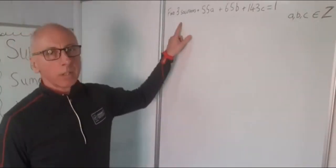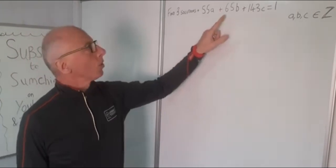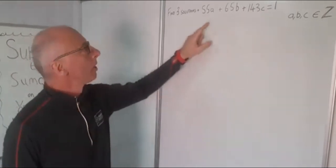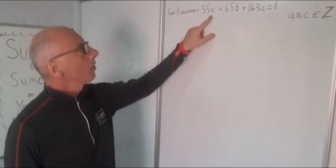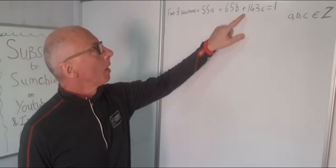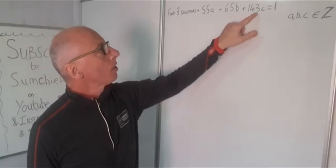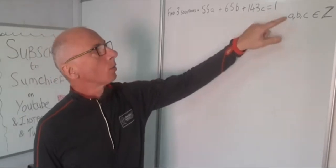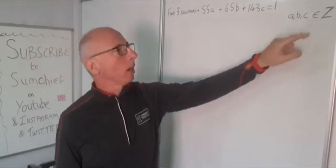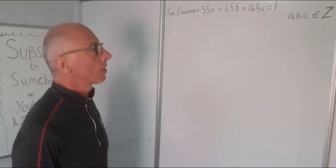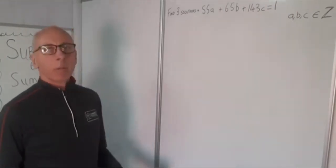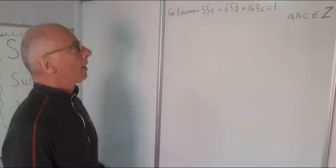We've got a question here: we need to find three solutions to this equation, so 55A plus 65B plus 143C equals 1, where A, B and C are integers. So how are we going to go about finding that?